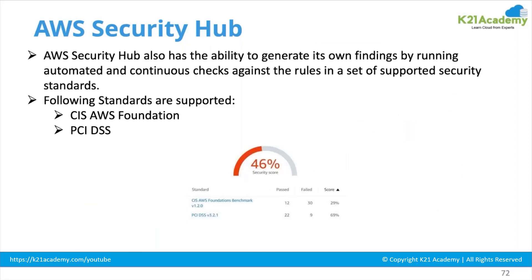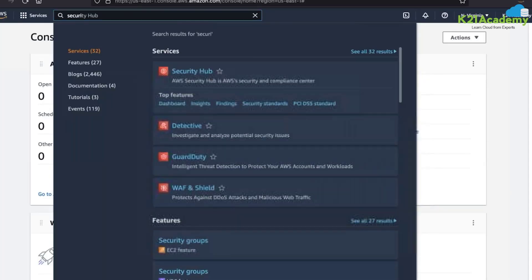Security Hub also has the ability to generate its own findings by running automated and continuous checks against supported security standards. Apart from receiving data from all integrated AWS security services, it has its own supported security standards: CIS AWS Foundations and PCI DSS. As you can see in the diagram, it shows a 46% security score, with CIS AWS Foundations Benchmark showing how many checks passed or failed, and similarly for PCI DSS.